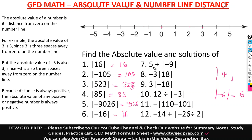Question seven says five plus the absolute value of negative nine. The absolute value of negative nine is nine. So that's five plus nine, which is 14.